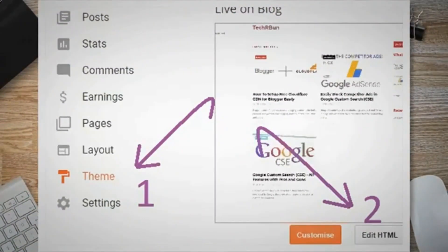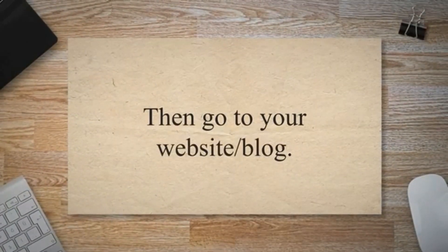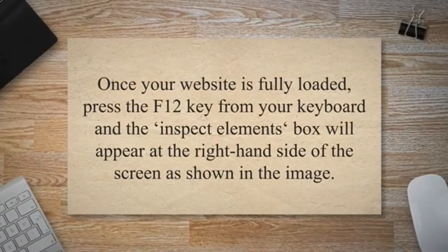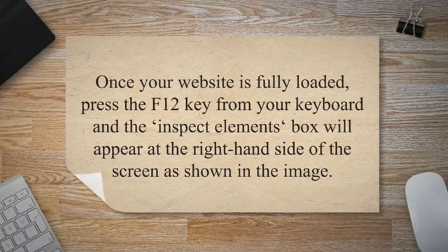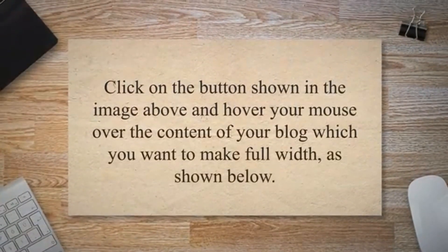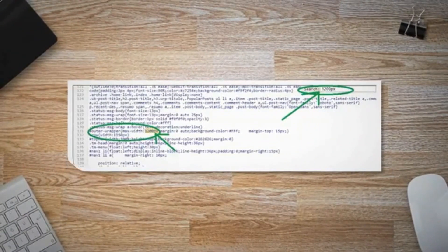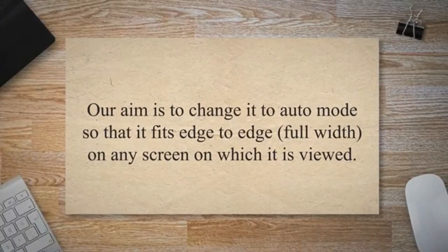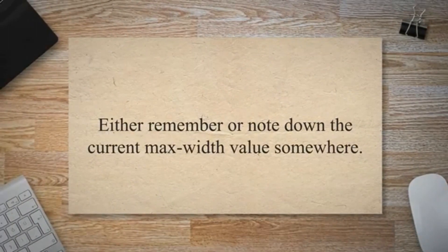Open Google Chrome or any other browser that supports developer tools. Then go to your website/blog. Once your website is fully loaded, press the F12 key from your keyboard and the Inspect Elements box will appear at the right-hand side of the screen. Click on the button shown in the image and hover your mouse over the content of your blog which you want to make full width. You will then be able to see the max-width of your blog. Our aim is to change it to auto mode so it fits edge-to-edge, full width, on any screen. Note down the current max-width value.